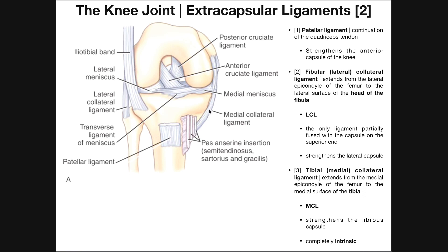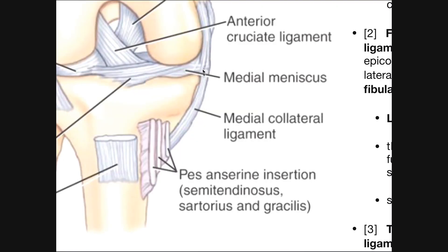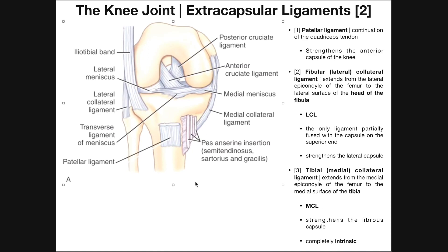Over here is our medial collateral ligament or MCL. If we look carefully, we can see that the MCL actually does fuse with the medial meniscus over here on the medial aspect. Down here is the pes anserine insertion. The pes anserine, if you're not familiar with it, is a common insertion point for three muscles: the semitendinosus, the sartorius, and the gracilis. That's the insertion of these three muscles — it's on the medial side, just medial to the patellar ligament.